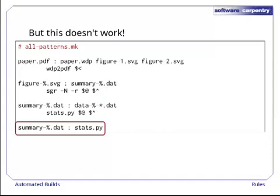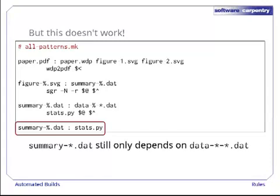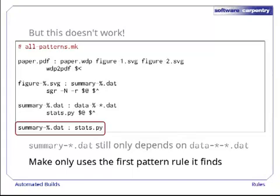Can we get rid of the last bit of redundancy by making summary*.dat depend on stats.py? No. This doesn't work. Even with this pattern rule, the summary files only depend on the corresponding raw data files, not on stats.py. Why? Because when MAKE sees two or more pattern rules that could match a filename, it uses the first and ignores the other. It's another wart and another source of hard-to-find headaches in MAKE.